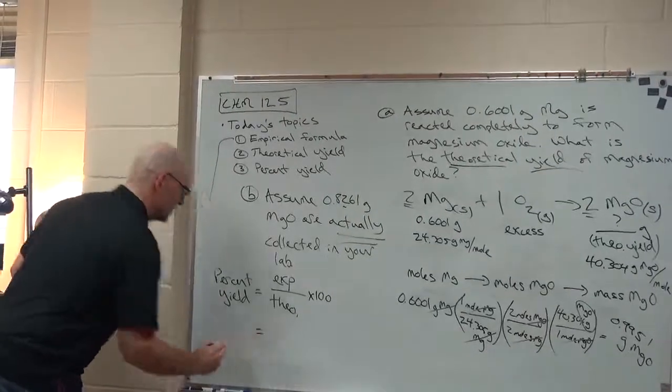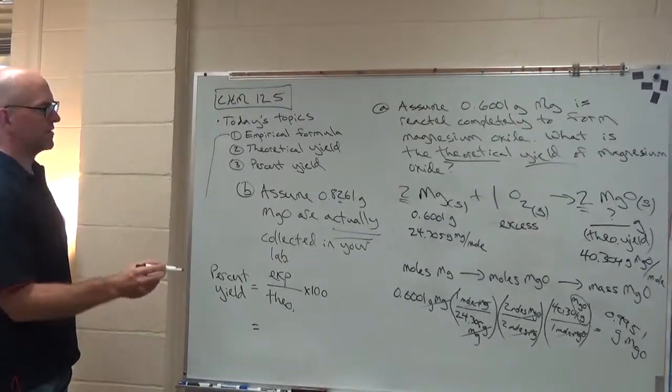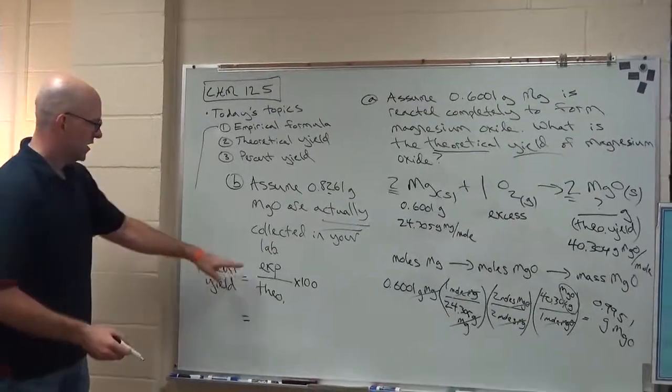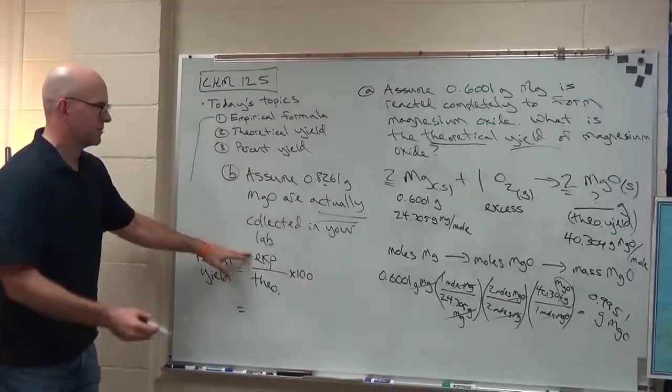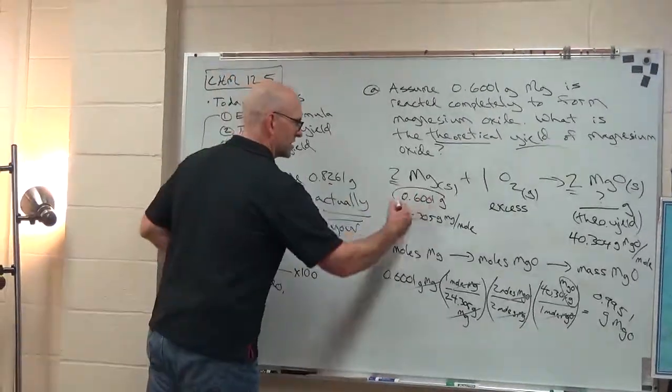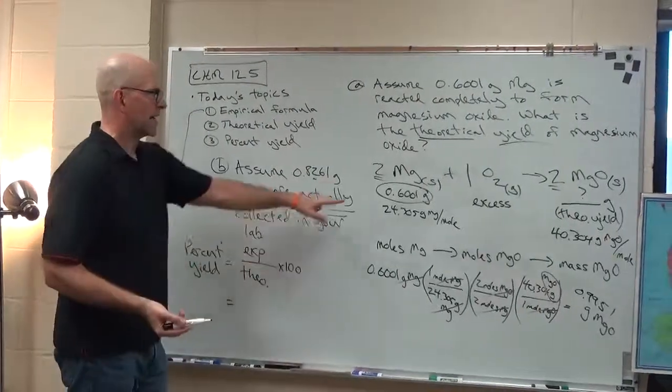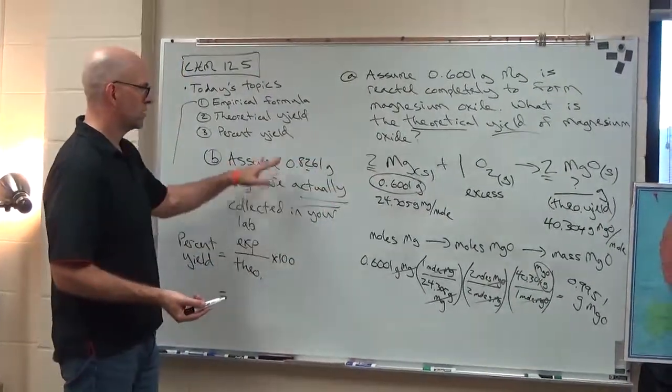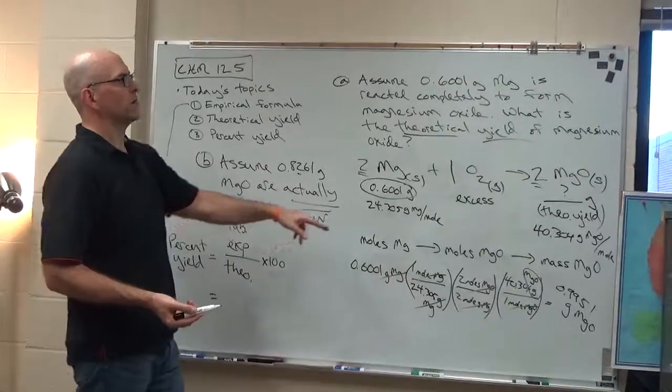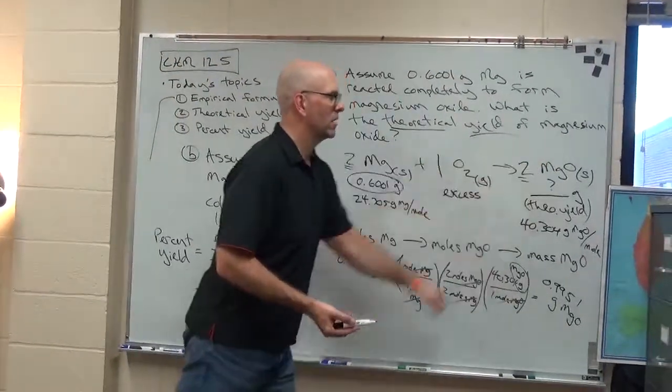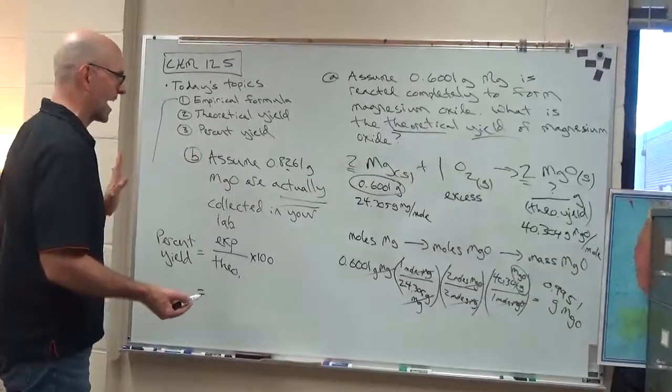So for this one, the main mistake I see some students make is experimental over theoretical. Sometimes they'll take the mass of what they're given to start with and they'll put that here. That doesn't make any sense. That's the mass of magnesium. If you're doing percent yield, you want to always be thinking about the product, what's yielded, not what's reacted.